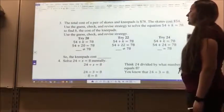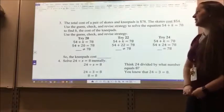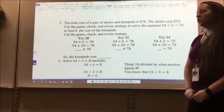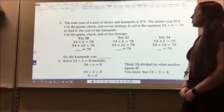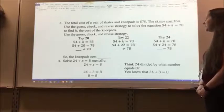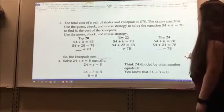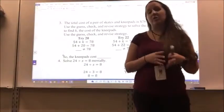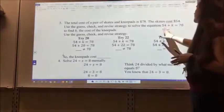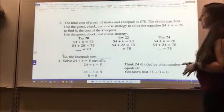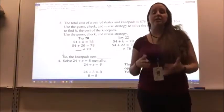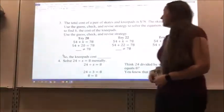Number three. The total cost of a pair of skates and knee pads is $78. The skates cost $54. Use the guess, check, and revise strategy to solve the equation 54 plus K equals 78 to find K, the cost of the knee pads. So, I can do a couple of different things. I'm going to first look at the equation that they gave me, which is 54 plus K equals 78. Then I'm going to think of a number that's probably going to get me relatively close to 78. Well, five to seven, that's two. So I'm going to try 20 first.